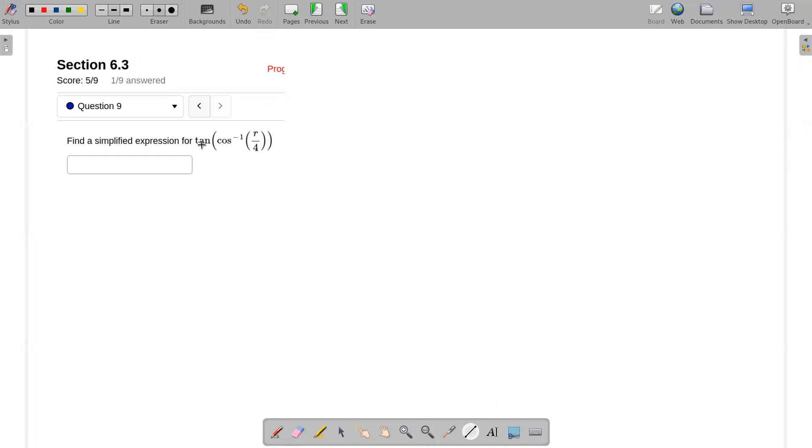So I have the tangent of the cosine inverse. Cosine inverse, I remember, is an angle. So I can reinterpret this problem to say the cosine of some angle is equal to r over 4. And because this whole cosine here is an angle, I want to find what is the tangent of that same angle.